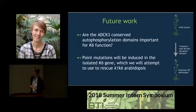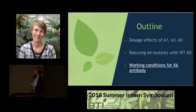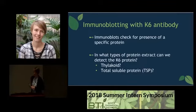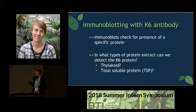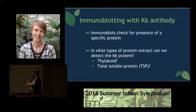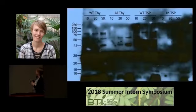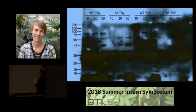Finally, I worked on determining the working conditions for immunoblotting with the K6 antibody. Immunoblots, also known as western blots, check for the presence of a specific protein within a sample. My goal was to determine if we can detect K6 protein in thylakoid protein extract or even better in total soluble protein extract. We know we can use the antibody to detect K6 in plastoglobule protein, but plastoglobule protein extraction is such a long process. Total soluble protein is much easier. I used wild-type and K6 mutant Arabidopsis for both thylakoid and total soluble protein extraction, and ran each sample with 10, 20, and 50 micrograms of protein. The immunoblotting results are very, very ugly — there is a ton of nonspecific binding.